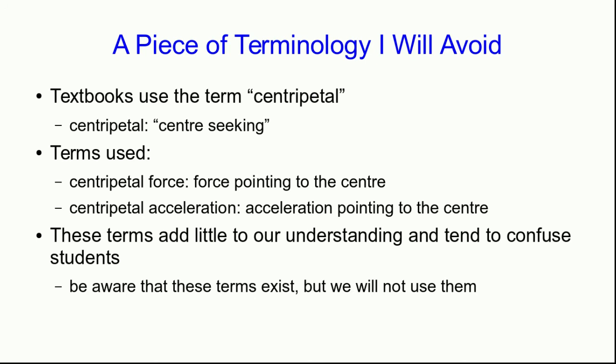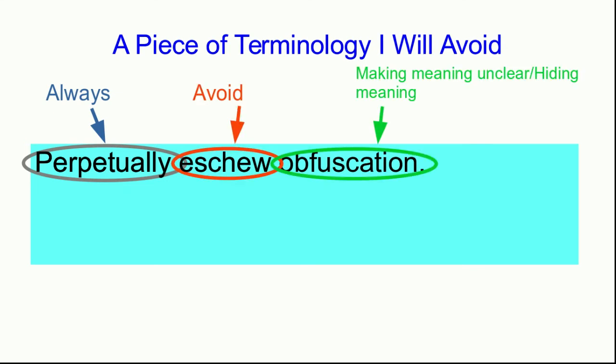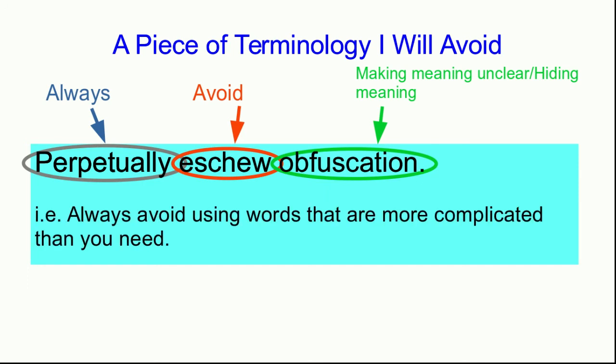What do I mean? Well, perpetually means always, eschew means avoid, and obfuscation means making meaning unclear. So in other words, we should always avoid using words that are more complicated than we need. We don't need to say centripetal. It just means to the center.